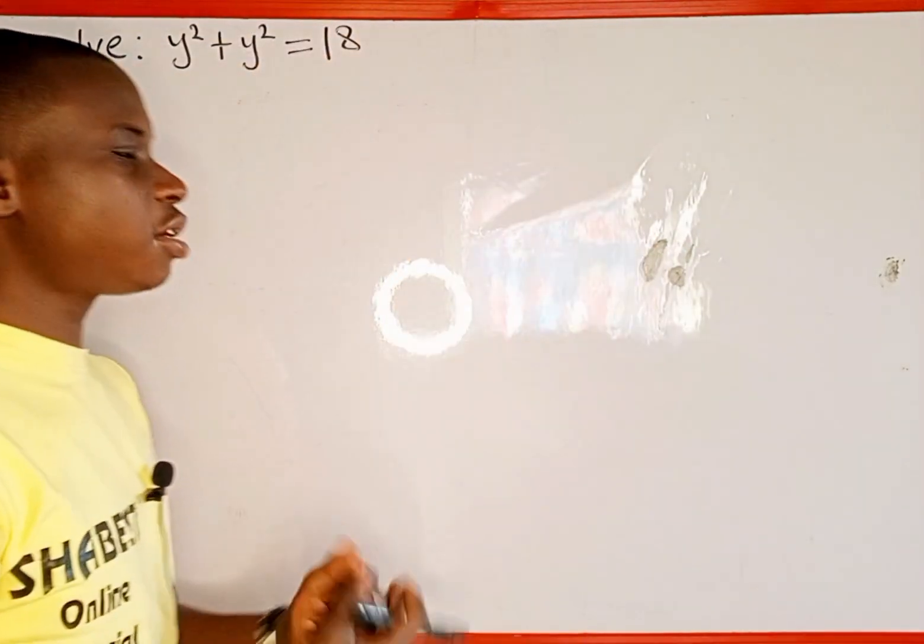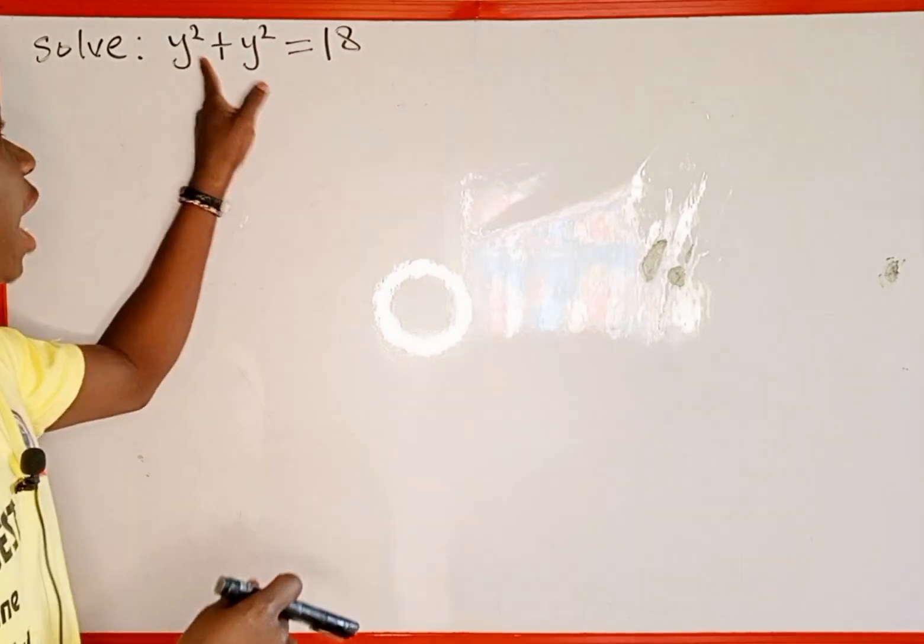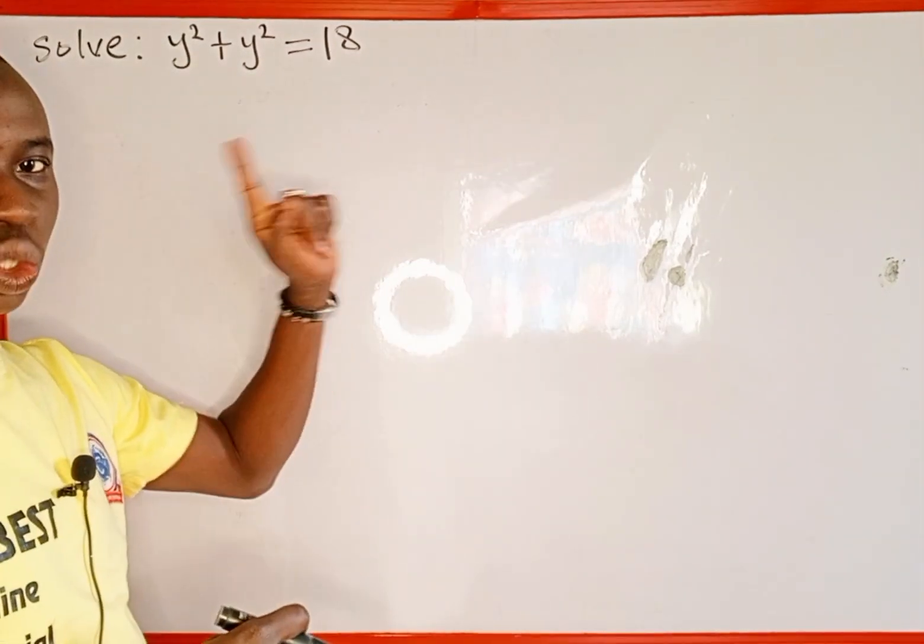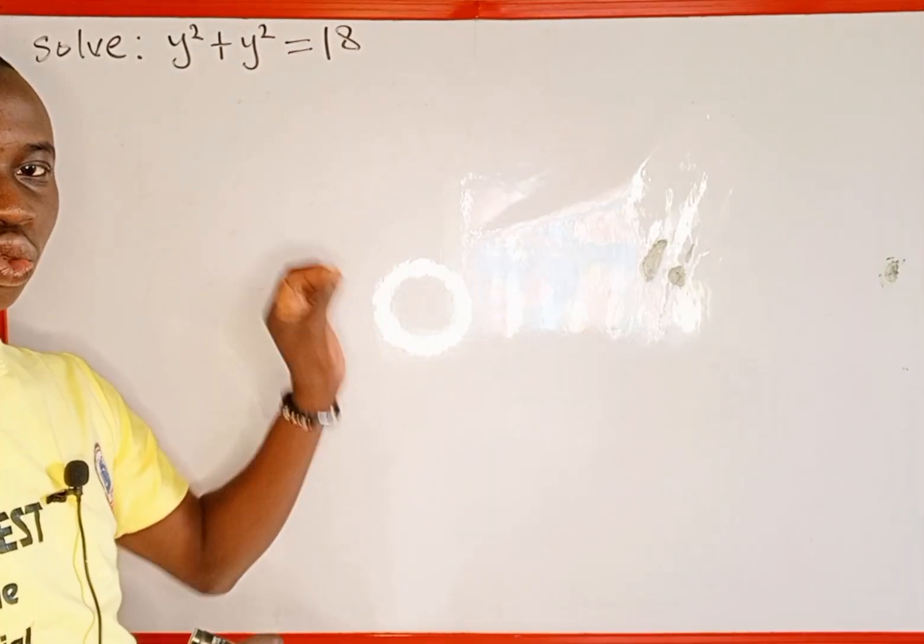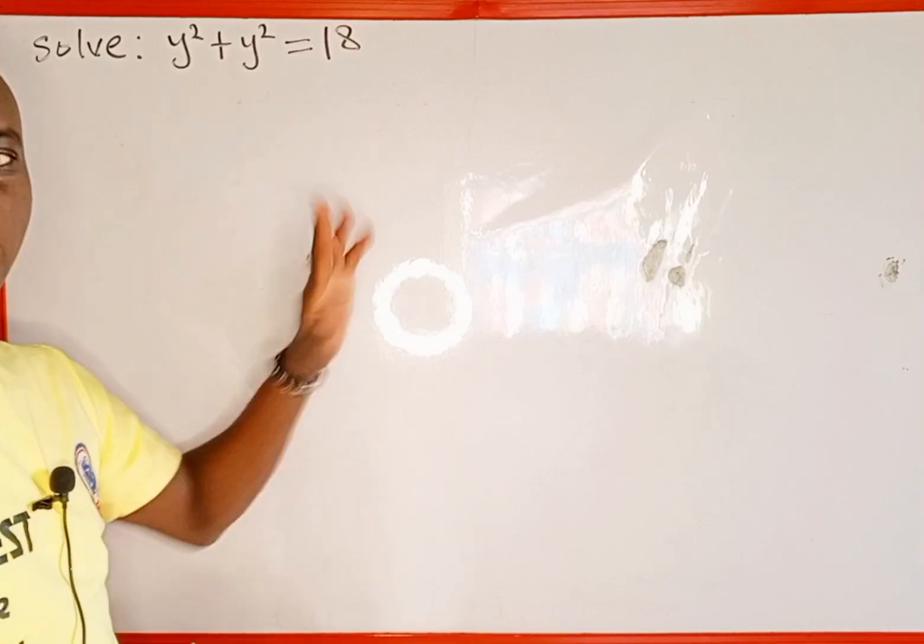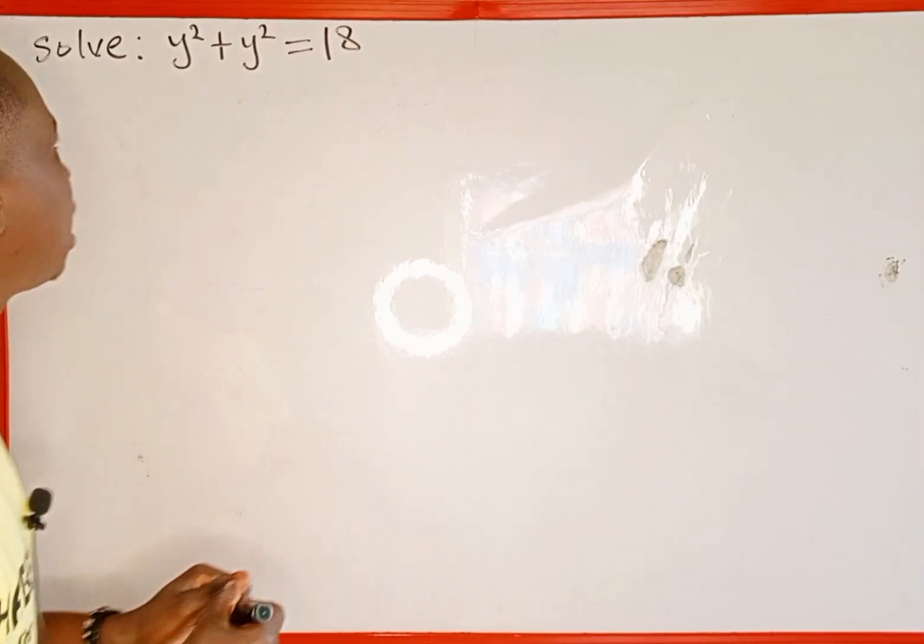Why do we call this quadratic equation? It is because the highest power of the variable here is 2. So we're expecting to get 2 possible values of y that satisfy this equation. Now let's get started.